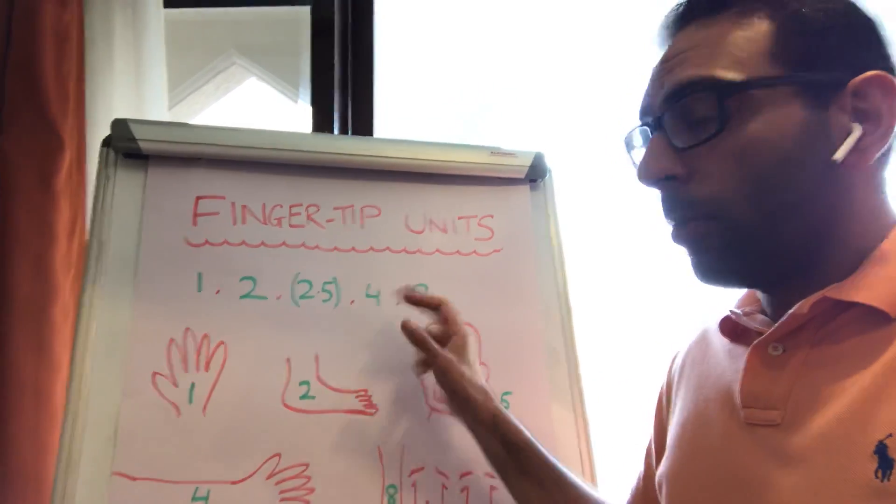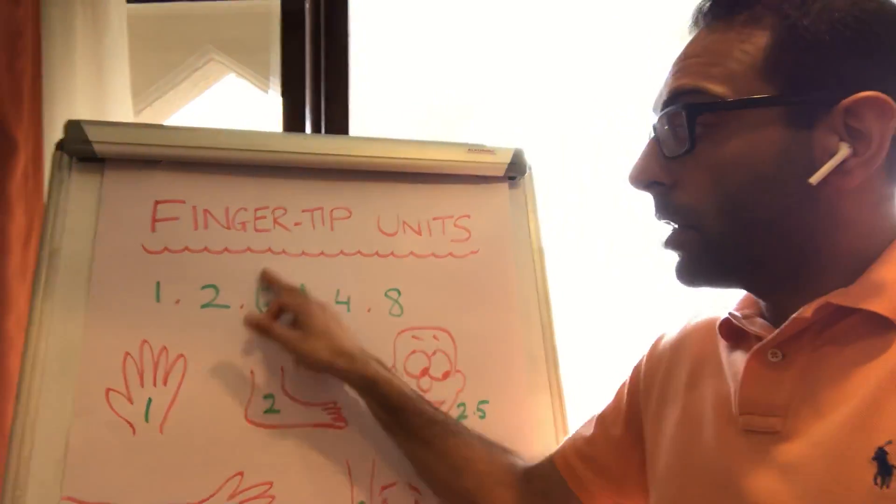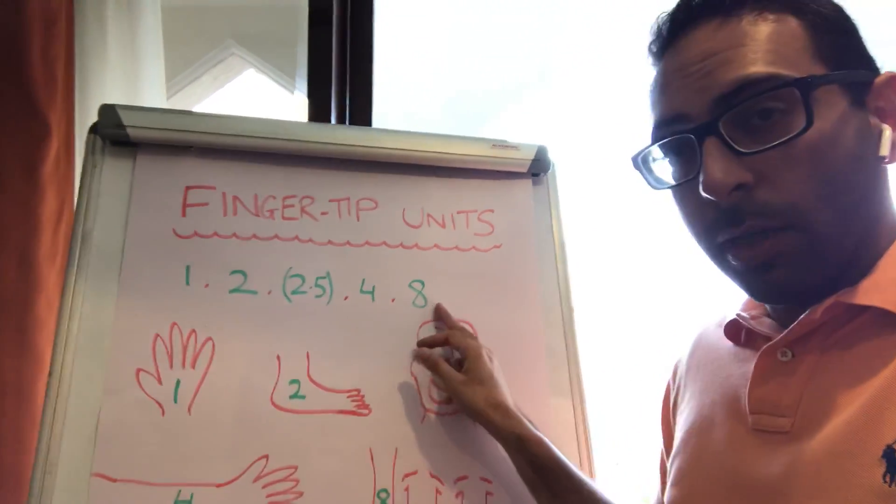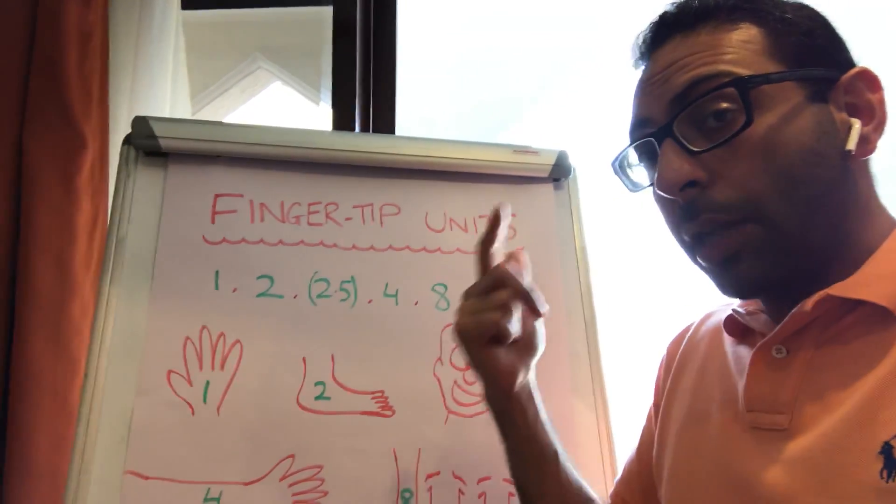Now I used to remember the numbers going up almost doubling. So 1, 2, 4, 8 with 2.5 in the middle. 1, 2, 4, 8 with 2.5 in the middle. Now these numbers might be different on certain websites. These are for adults. Remember they're different for children but it just gives you a general idea about how to remember them.